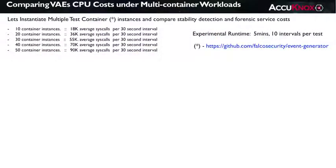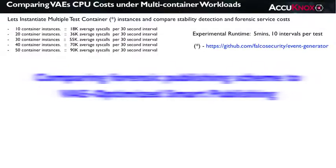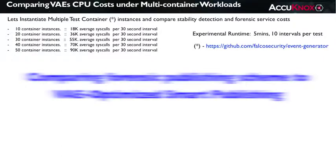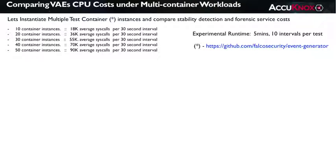Let's do a cost comparison between a standard but performance-aware forensic publisher that caches and bulk-publishes application forensic streams versus a VAE-optimized publishing service. For the experiment, I used a test container running an app called Focal, which is the syscall test generator used by the Felco project. To do performance comparisons that vary the workload, I incremented by 10 the number of instances of Focal that I ran on my host, from 10 to up to 50 instances. You can see on this chart the average number of total system calls that the containers collectively produced on my host, per 30-second time interval. I instrumented the host kernel with eBPF and sysdig to capture about 70 security-related system calls.